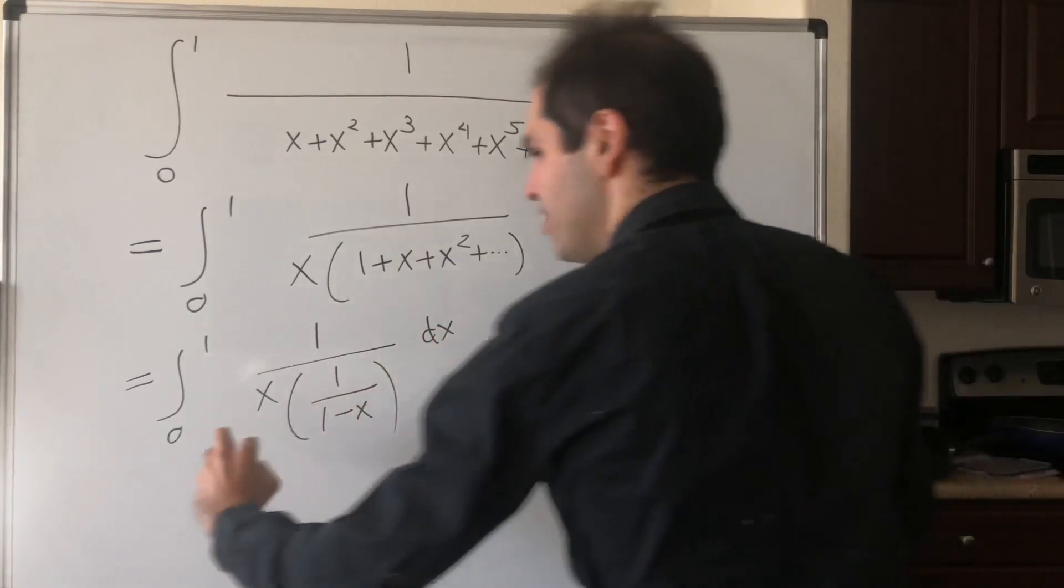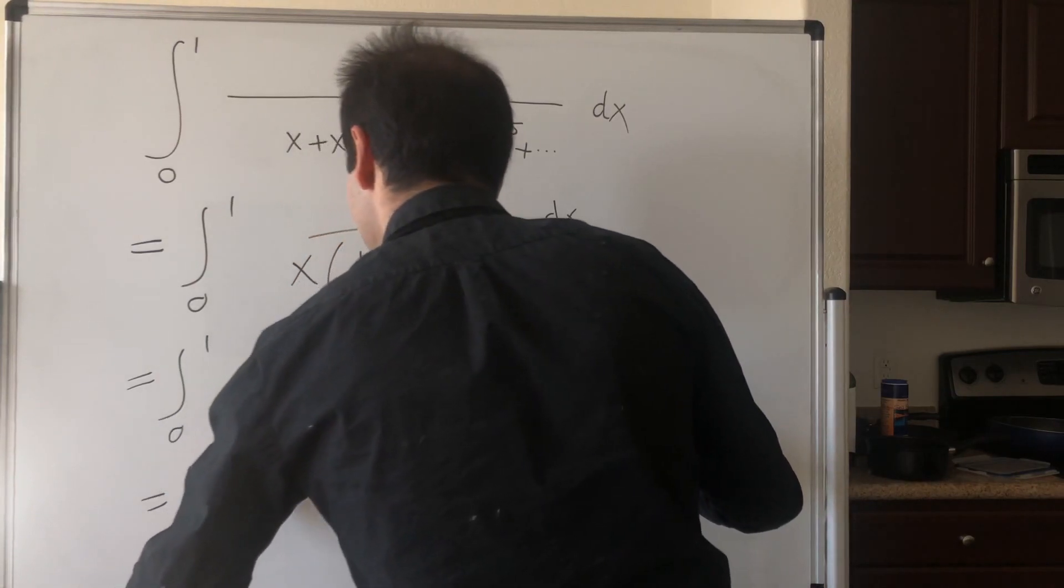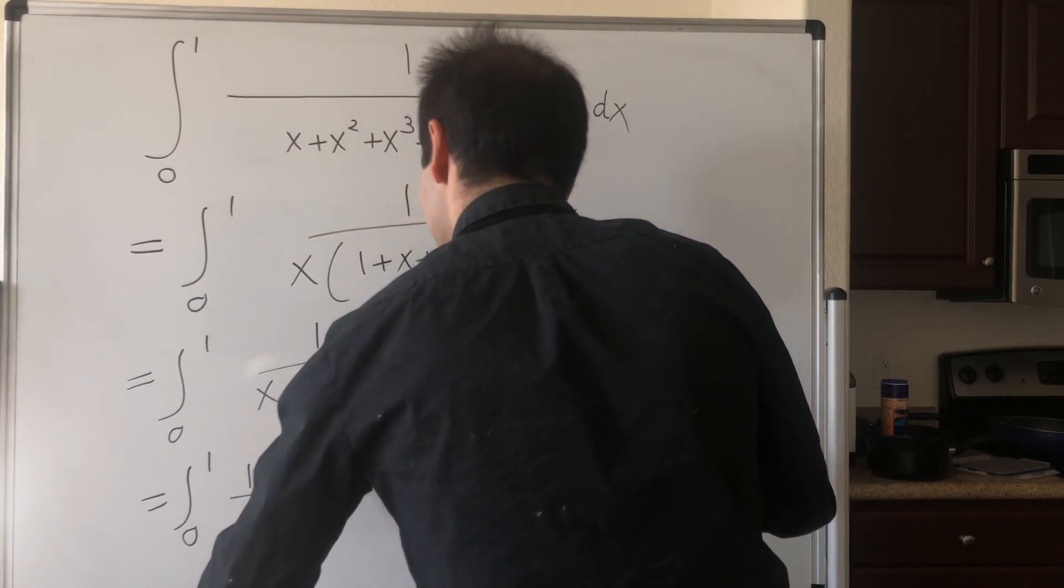dx. And this becomes the integral from 0 to 1 of 1 minus x over x, dx.